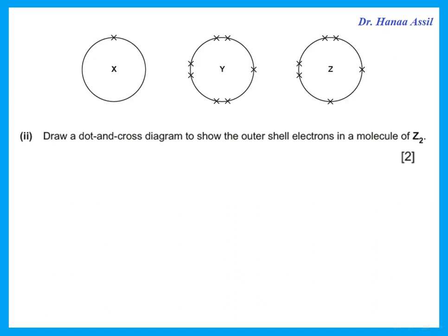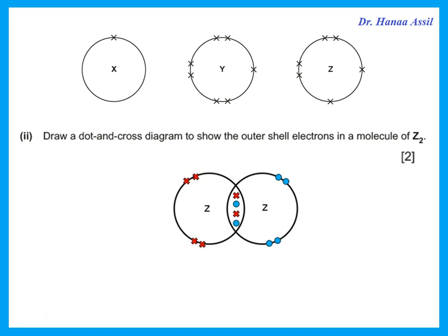Draw a dot and cross diagram to show the outer shell electrons in the molecules of Z2. Element Z has 6 electrons in its outer shell, meaning each atom needs 2 electrons. If 2 atoms come together, each one will share 2 electrons with the other. That means each atom will have 4 of its electrons not shared, drawn away from between the 2 atoms, and 2 electrons from each atom are drawn between the 2 atoms as the shared pairs.